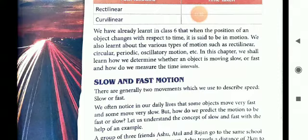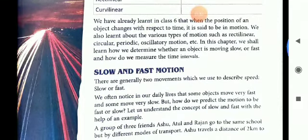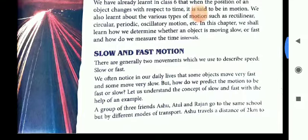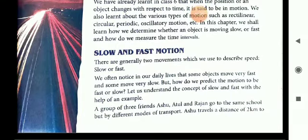Various types of motion are there: rectilinear, circular, periodic, oscillatory motion, which you have read in class 6. Now in this chapter again we have to read in detail. We have to determine whether an object is moving slow or fast and how do we measure the time also.